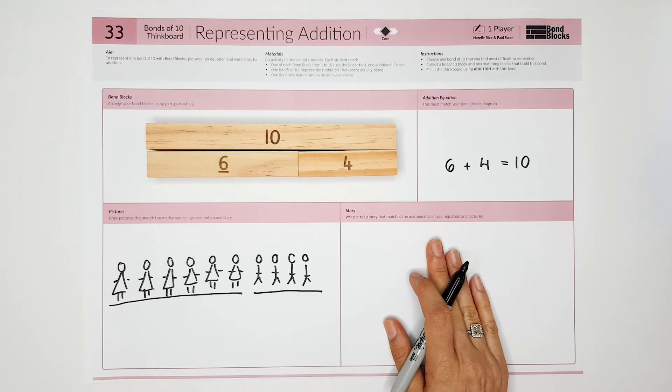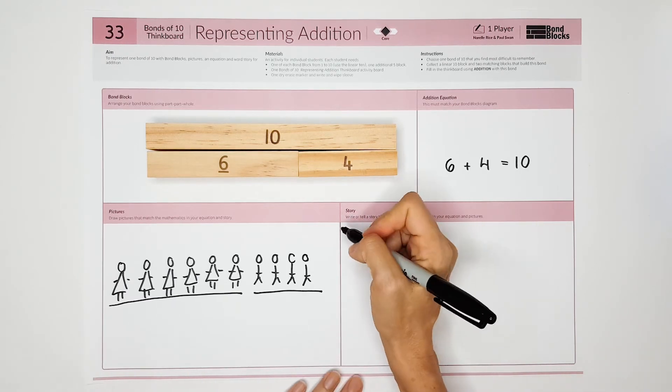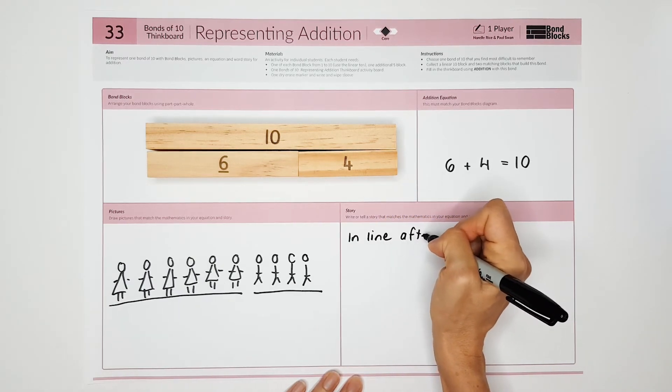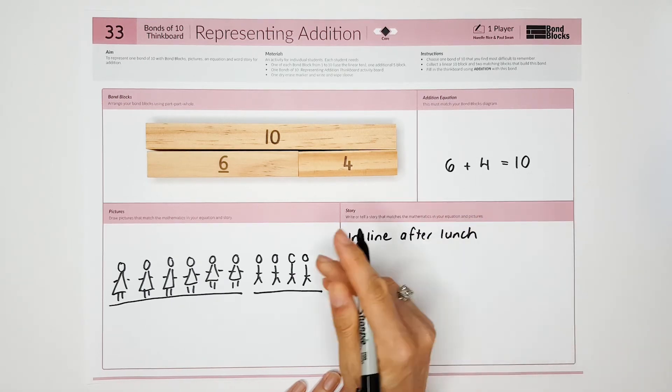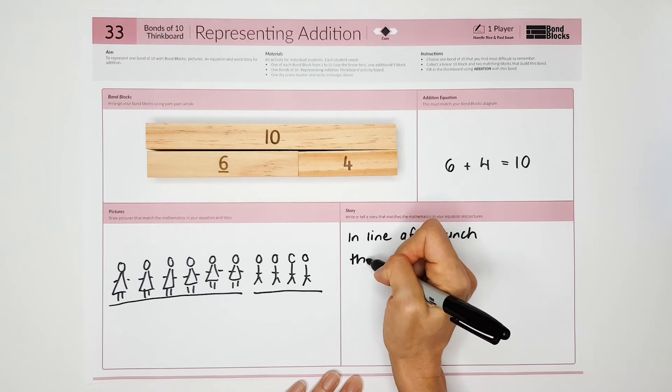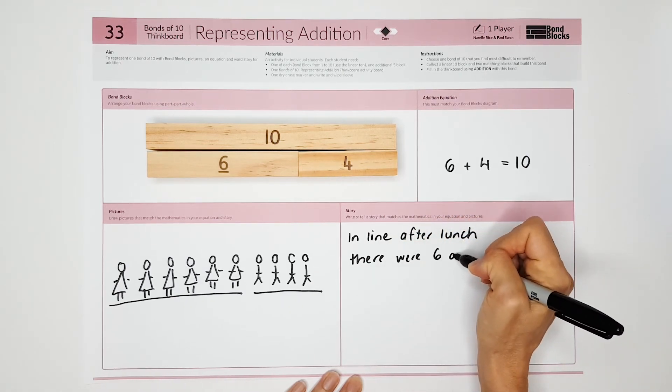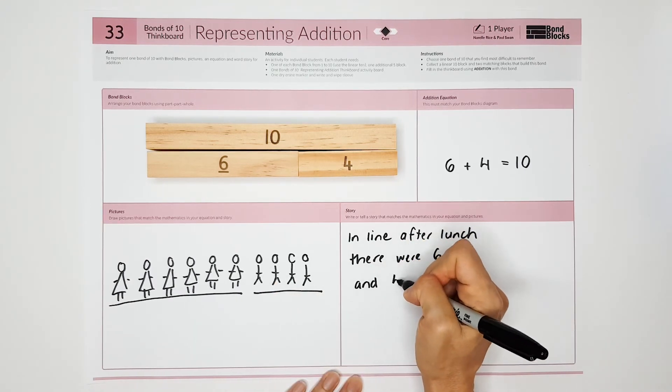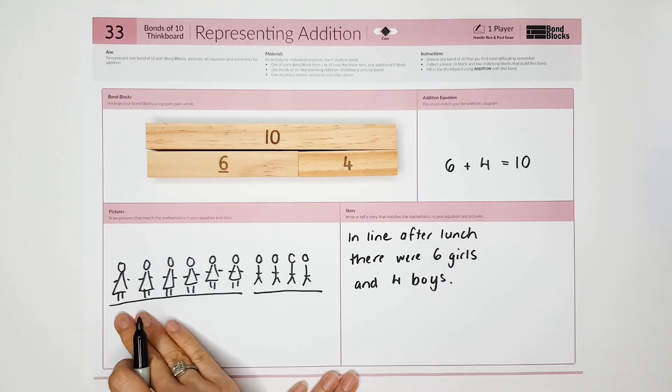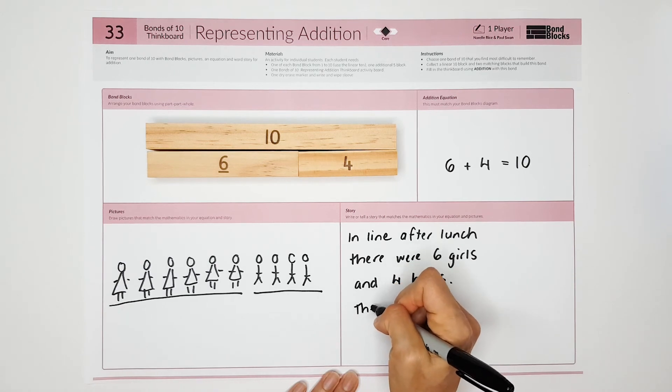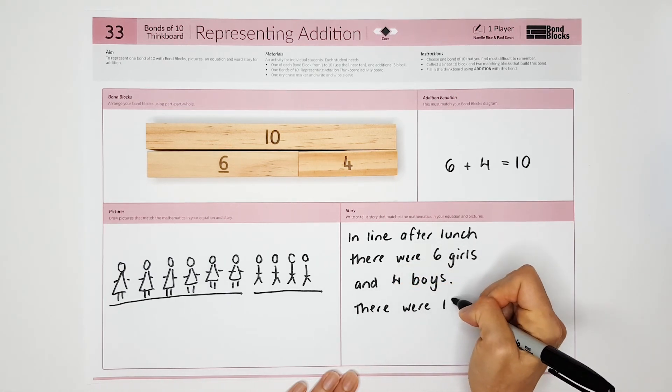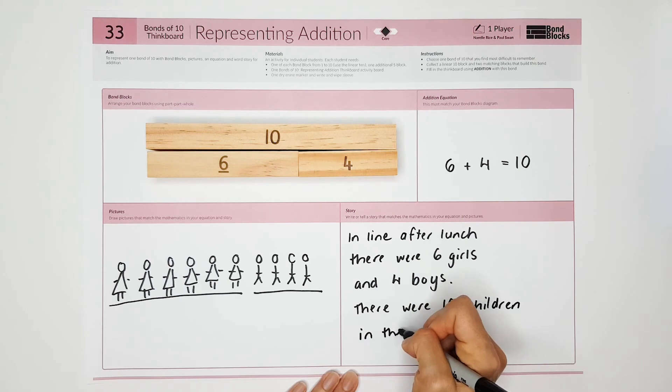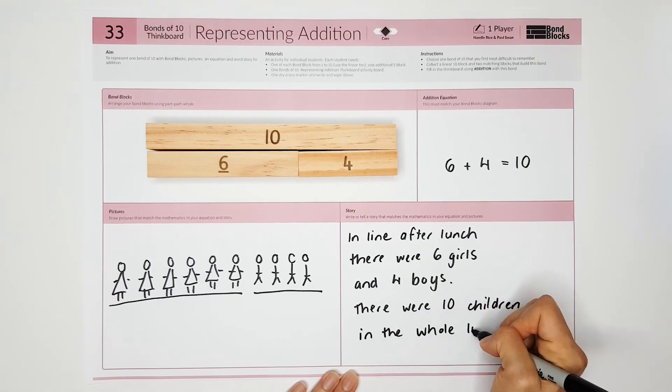I'm going to write this with words. You can tell it to an adult if that's easier. In line after lunch, there were 6 girls and 4 boys. There were 10 children in the whole line.